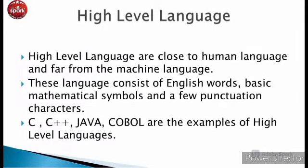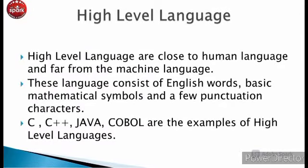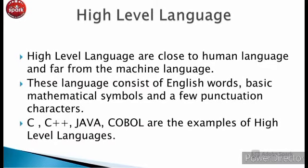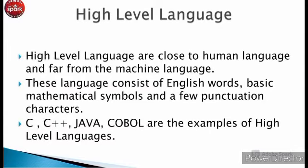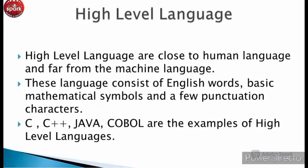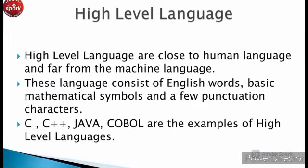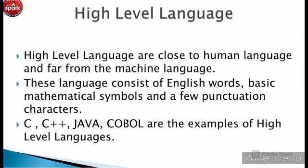High level languages are close to the human language and far from the machine language. These languages consist of English words, basic mathematical symbols, and few punctuation factors. C, C++, Java, and COBOL are examples of high level languages.